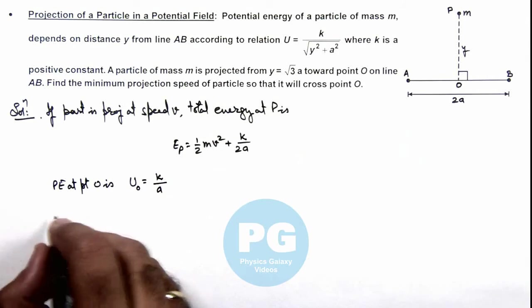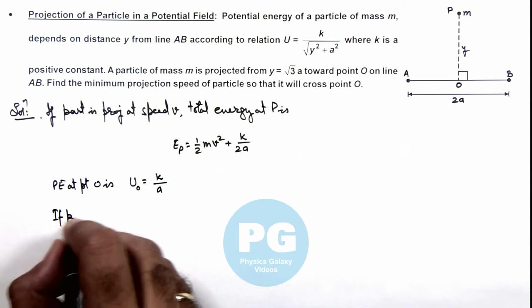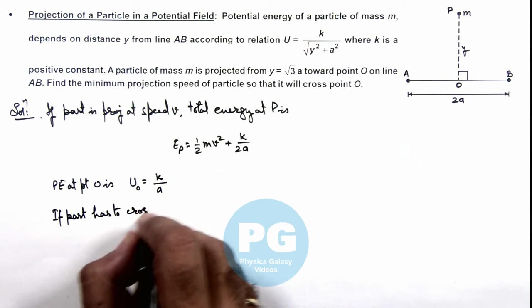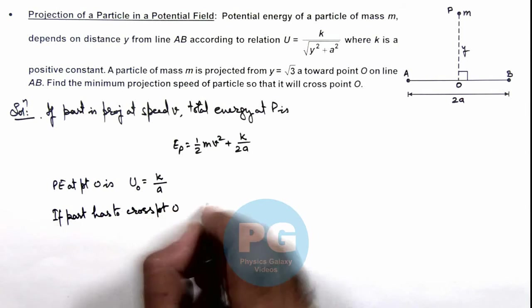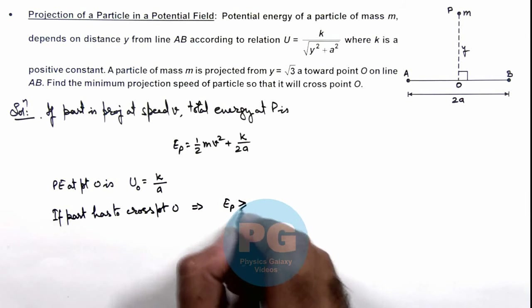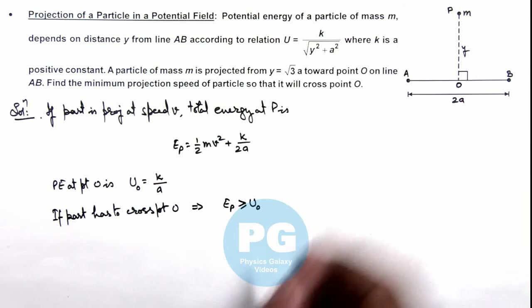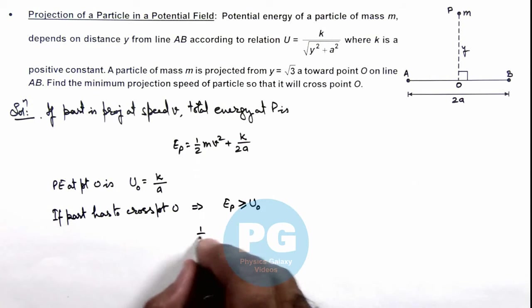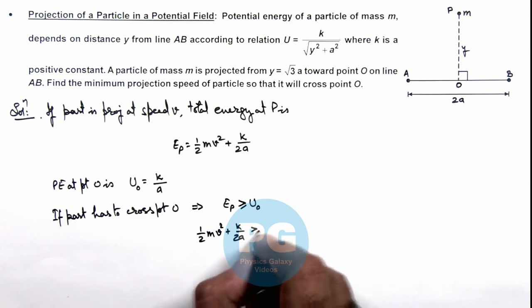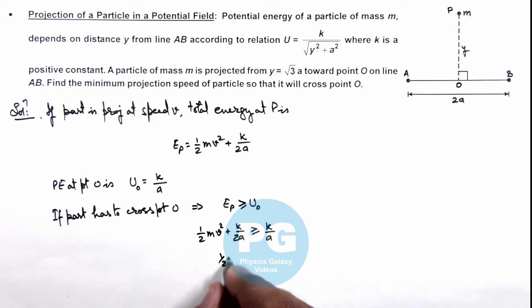We can see if the particle has to cross point O, this implies the energy at P should be greater than or equal to energy at point O. So if we substitute, it is half m v squared plus k by 2a. This should be greater than or equal to k by a. Or here we can write half m v squared should be greater than or equal to k by a minus k by 2a, which is k by 2a.